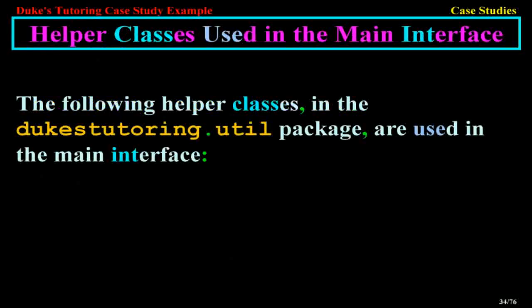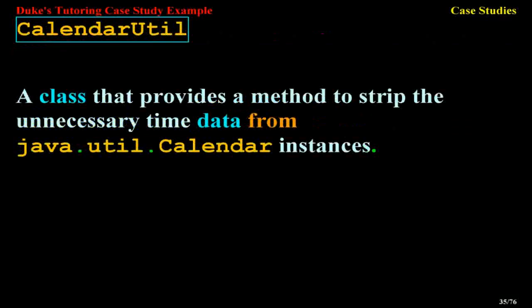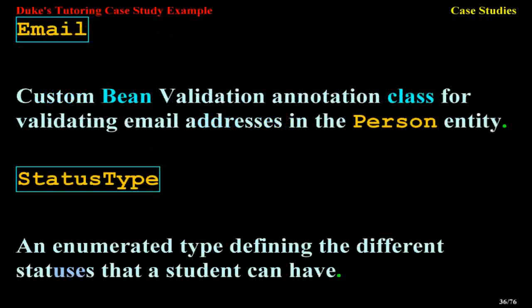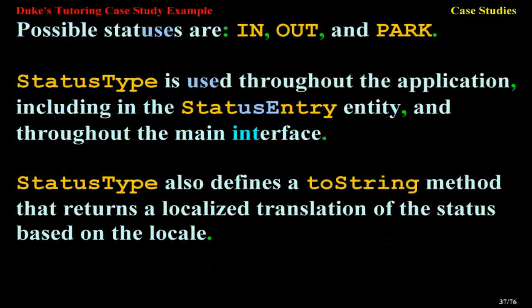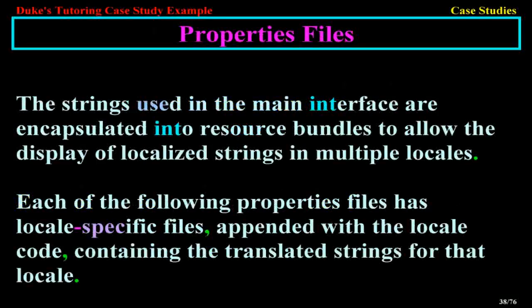The following helper classes in the Duke's Tutoring util package are used in the main interface. CalendarUtil is a class that provides a method to strip unnecessary time data from Java.util.Calendar instances. Email is a custom Bean Validation annotation class for validating email addresses in the Person entity. StatusType is an enumerated type defining the different statuses a student can have — possible statuses are: In, Out, and Park. StatusType is used throughout the application including in the StatusEntry entity and throughout the main interface. StatusType also defines a method that returns a localized translation of the status based on the locale properties files.